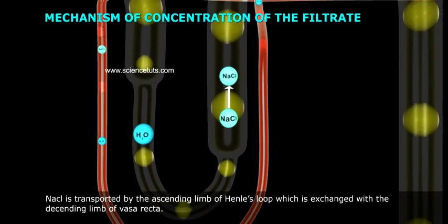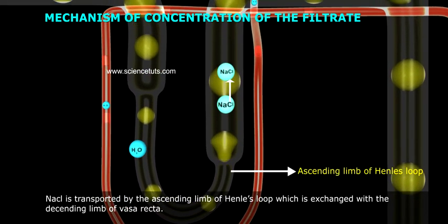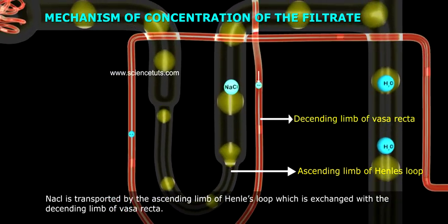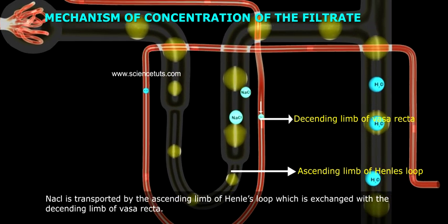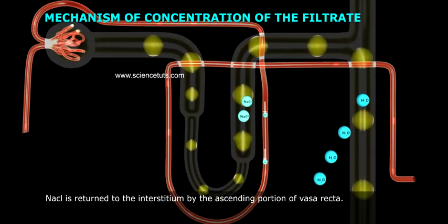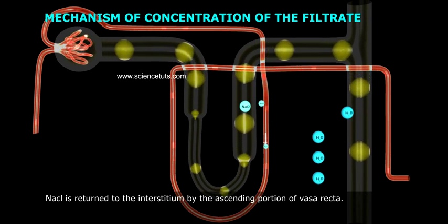NaCl is transported by the ascending limb of Henle's loop, which is exchanged with the descending limb of Vasa recta. NaCl is returned to the interstitium by the ascending portion of Vasa recta.